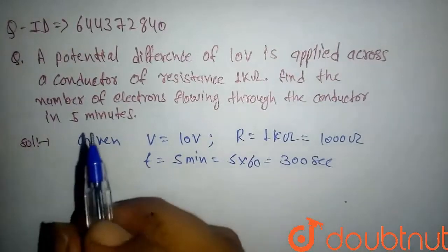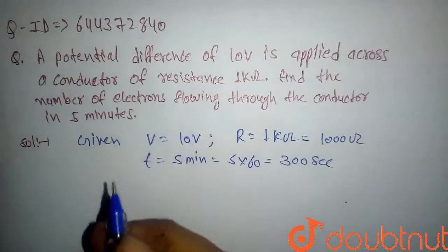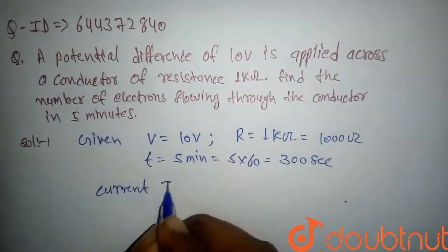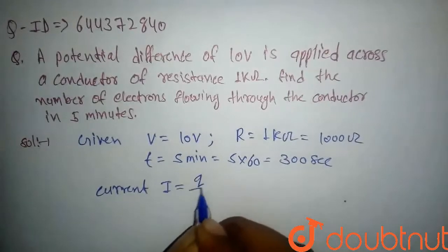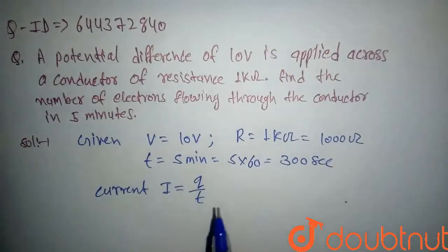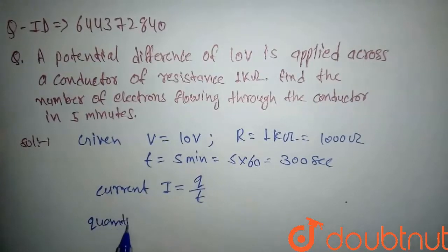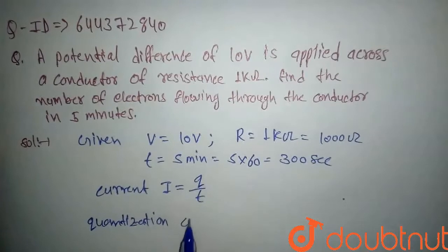So we know that here we have to find the number of electrons. First, we know that the current is given by I = Q/t. Also, we know from quantization of charge...